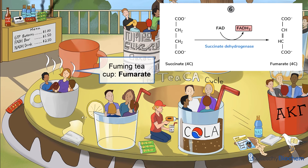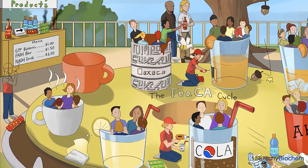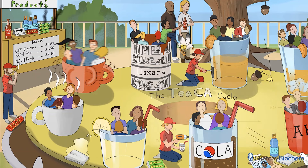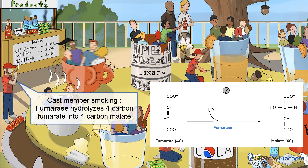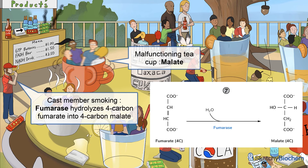Succinate dehydrogenase is found in the inner mitochondrial membrane, unlike all the other enzymes in the TCA cycle which are found in the matrix. Next to our fuming teacup, there's a cast member taking a smoke break — he's fumarase, which hydrolyzes 4-carbon fumarate into 4-carbon malate. He better watch out for that malfunctioning teacup spinning out of control — malfunctioning for malate, that is.